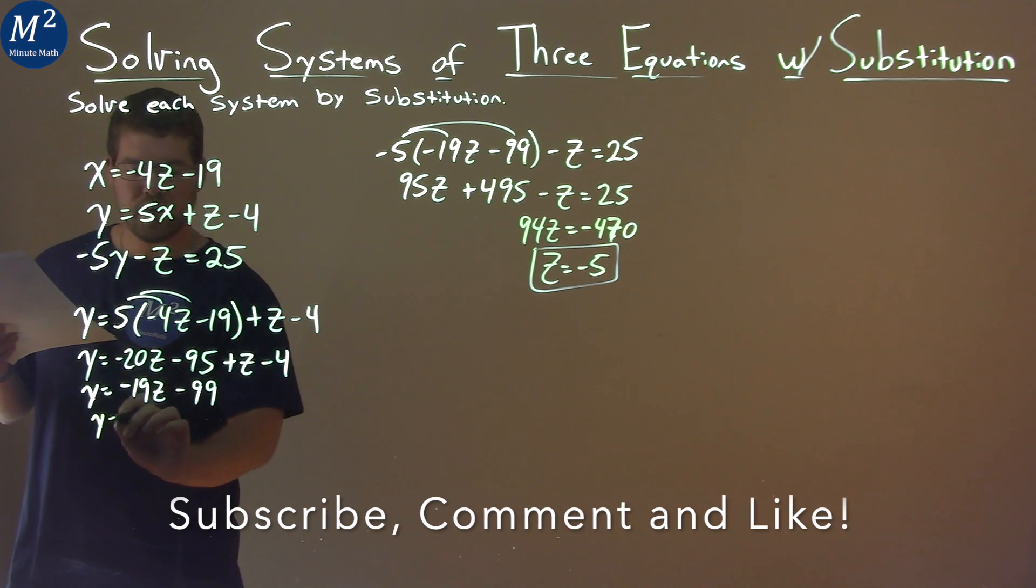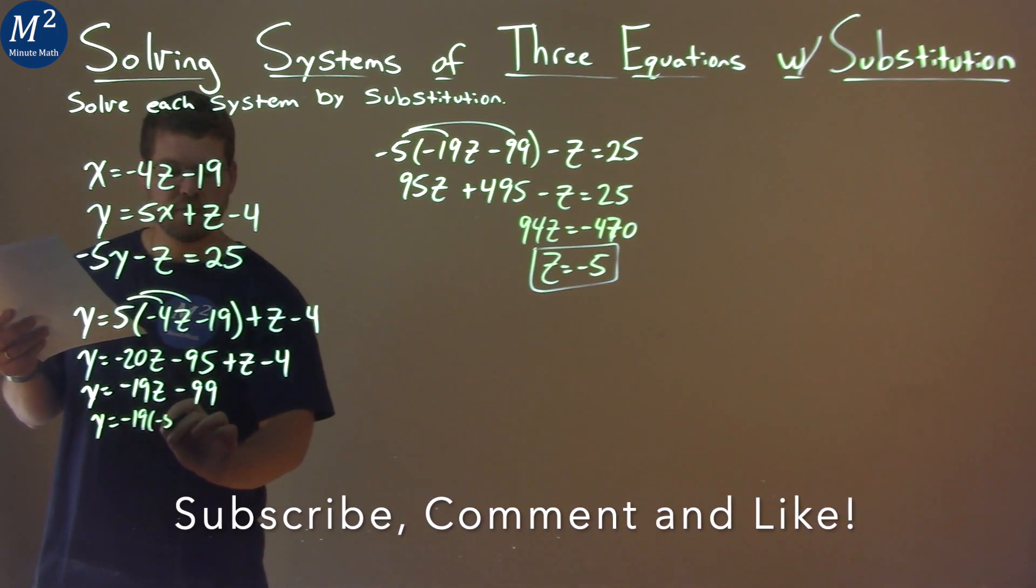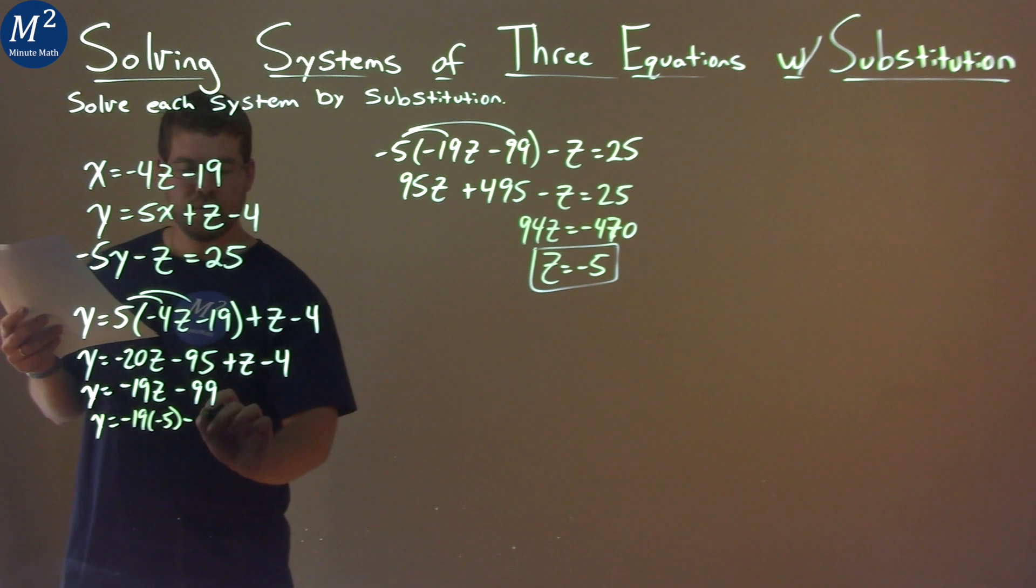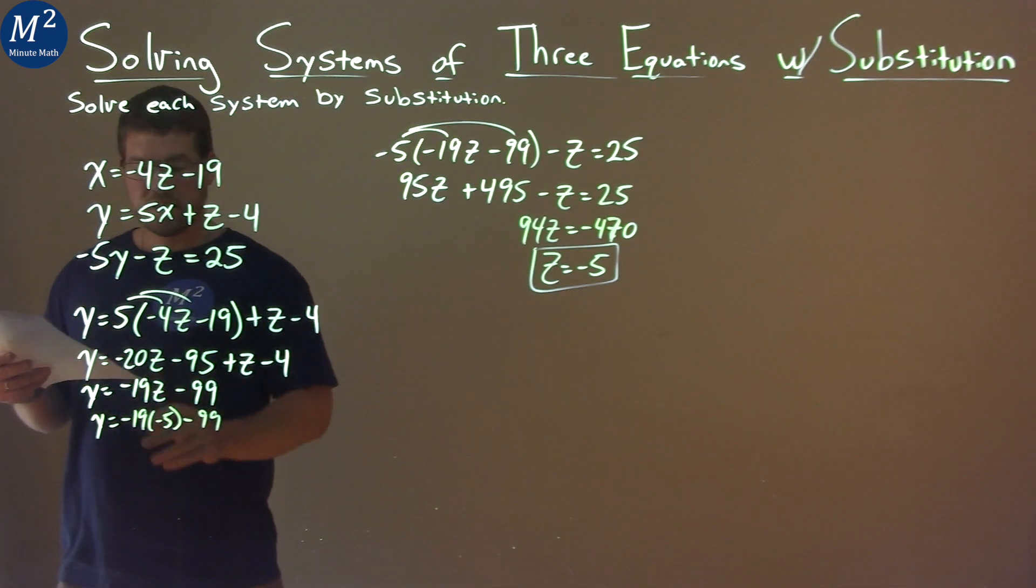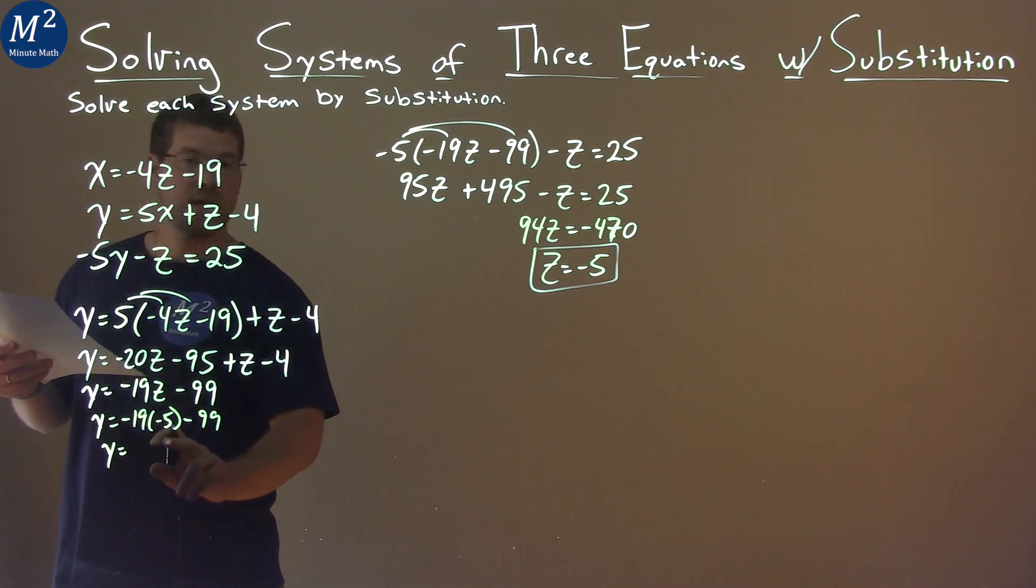Let's put that in. So y equals negative 19 times z, which is negative 5, now that we found, minus 99. Keep going. Let's just simplify. So y equals negative 19 times negative 5 is positive 95. Then we subtract 99 to that.